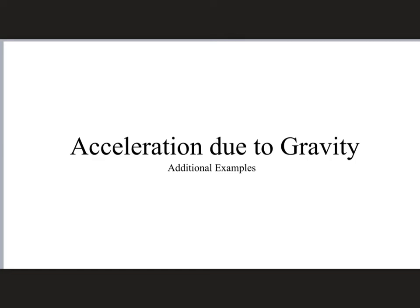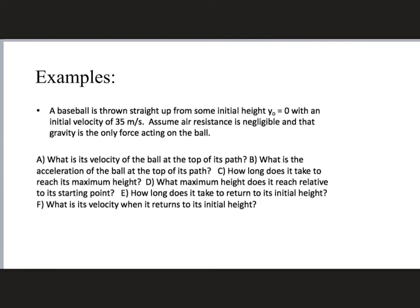Let's look at an additional example of working problems involving the acceleration due to gravity. Here's an example. Like a lot of physics problems, it's got multiple parts. It says a baseball is thrown straight up from some initial height y-naught equal to zero, with an initial velocity of 35 meters per second. We already know the initial position is y-naught equal to zero, the initial velocity is 35 meters per second. We can assume air resistance is negligible and that gravity is the only force acting on the ball.